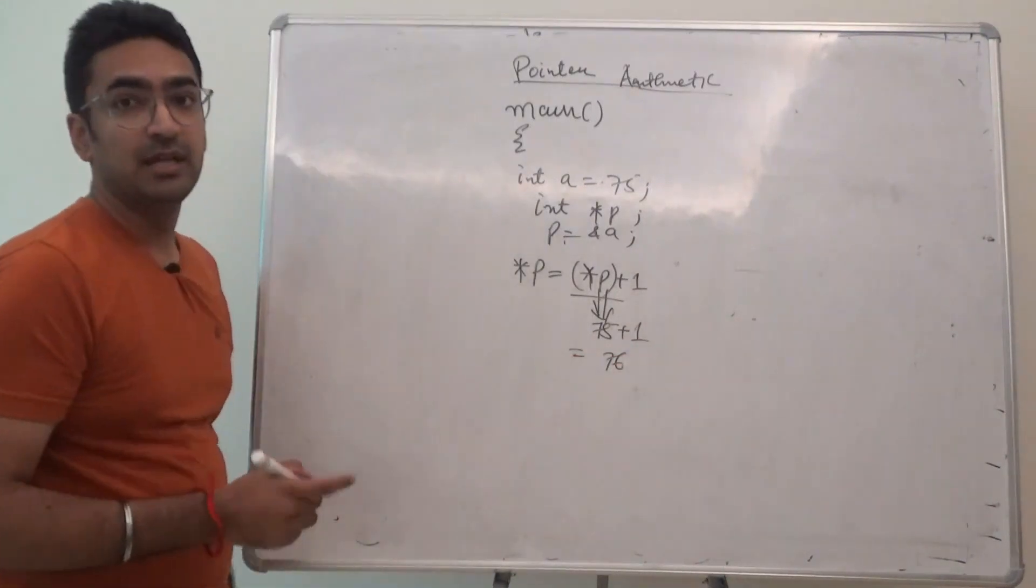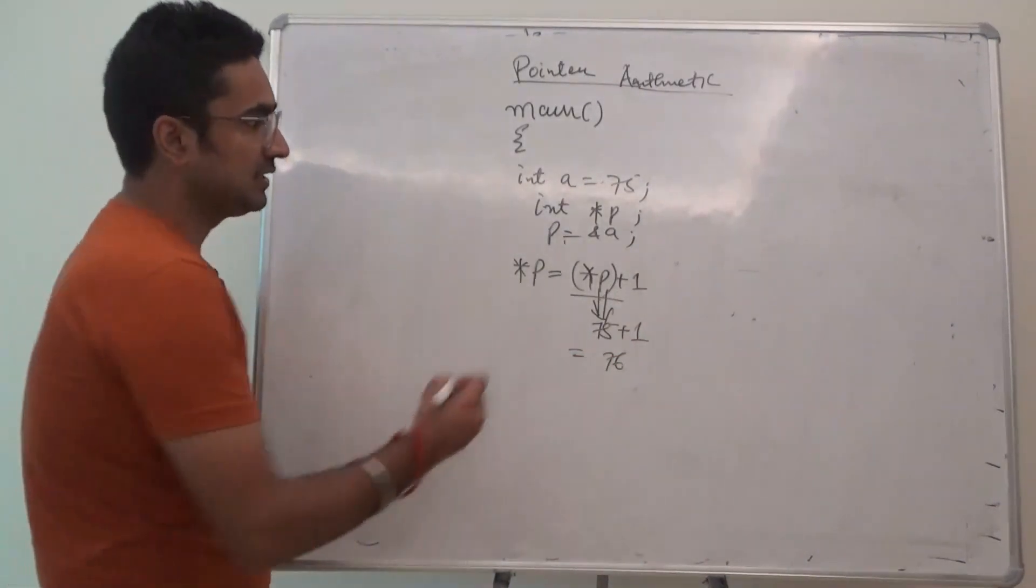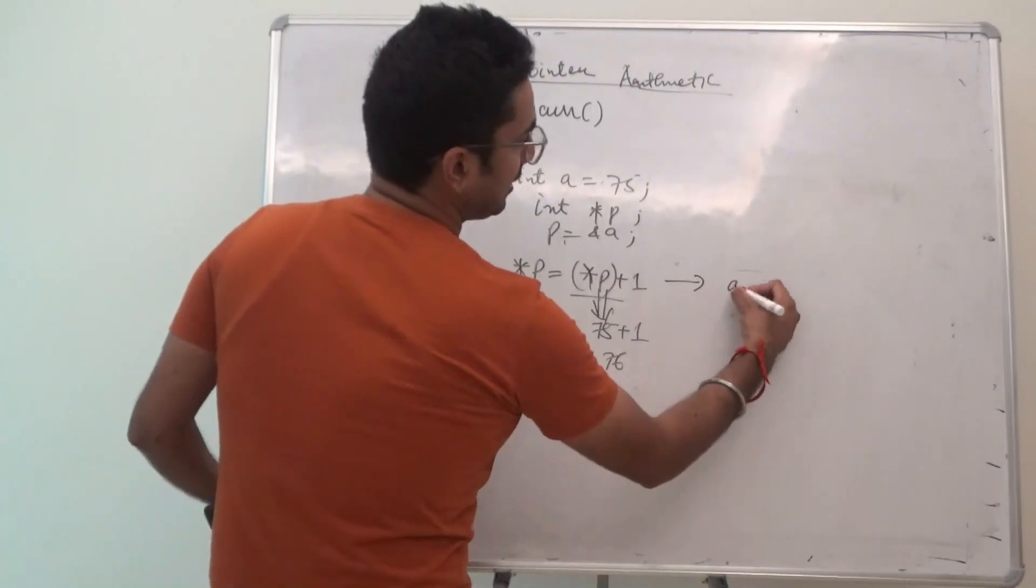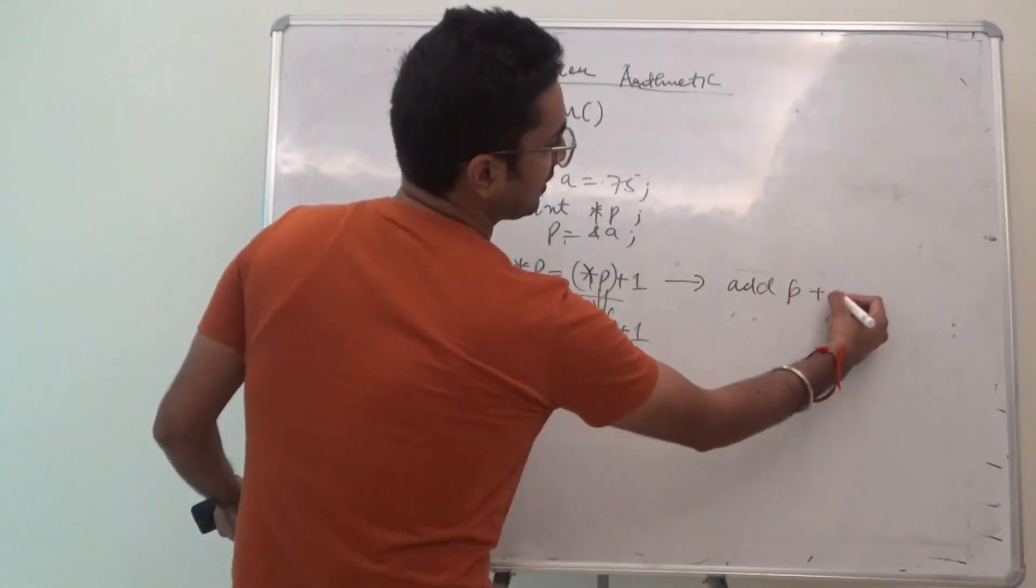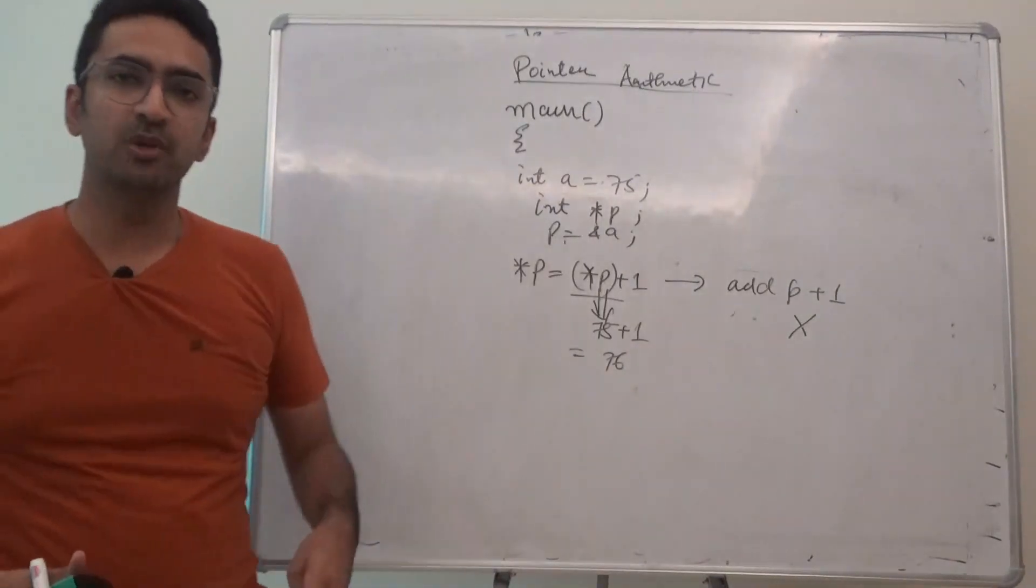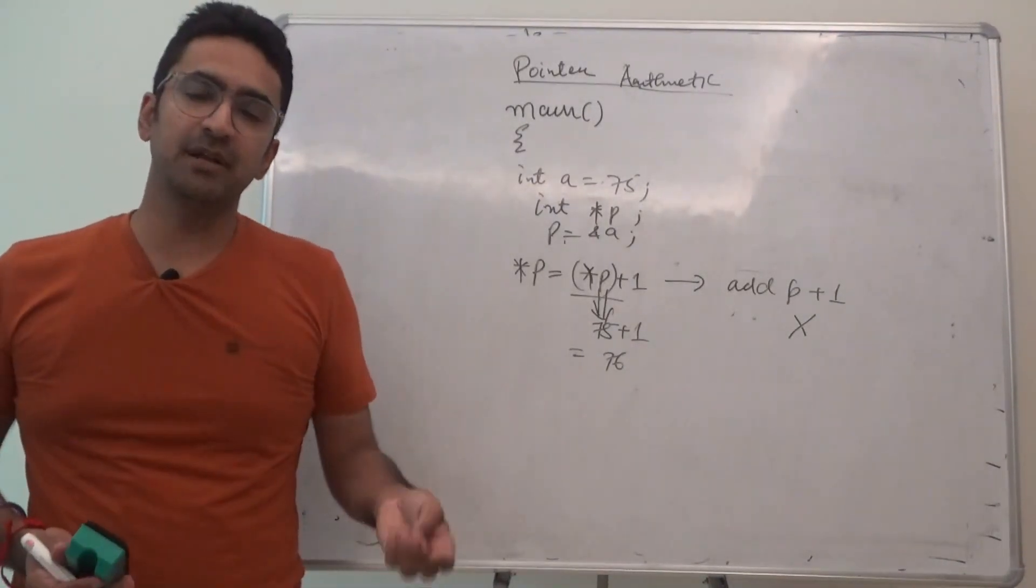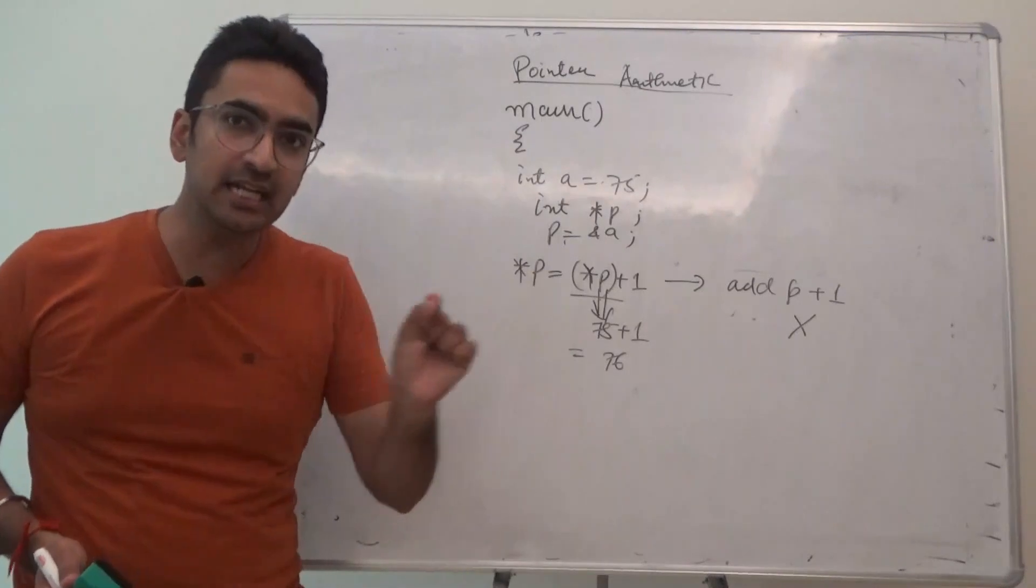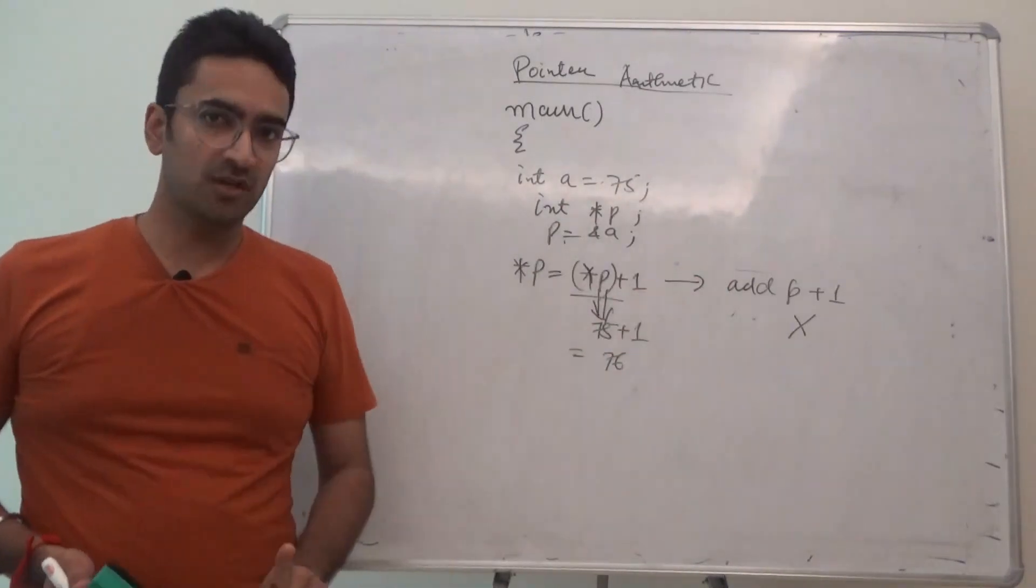Now the point over here is, can I add p plus 1? No. The answer is clearly no. Why? Because pointer does not hold a data type and you are directly adding an integer to p, which is not possible.